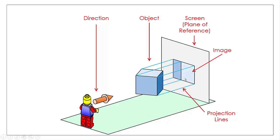From our previous video, the relationship between our viewing direction and our projection lines is that the two are parallel, and the relationship between our direction and our plane of reference is that the two are perpendicular. In other words, our plane of reference or screen must be straight in front of our viewing direction so it doesn't distort the image.